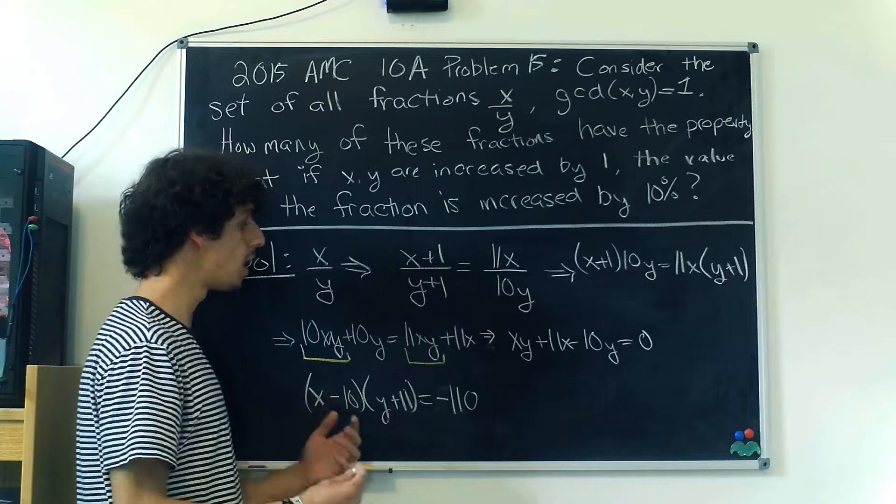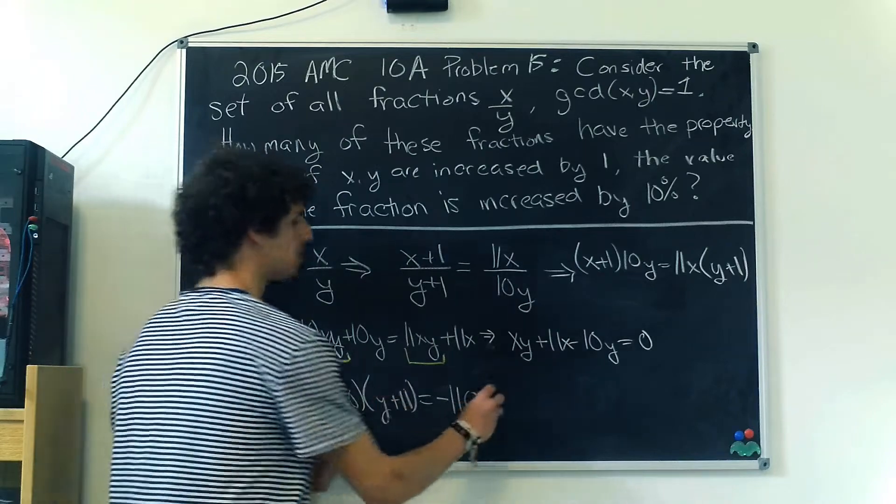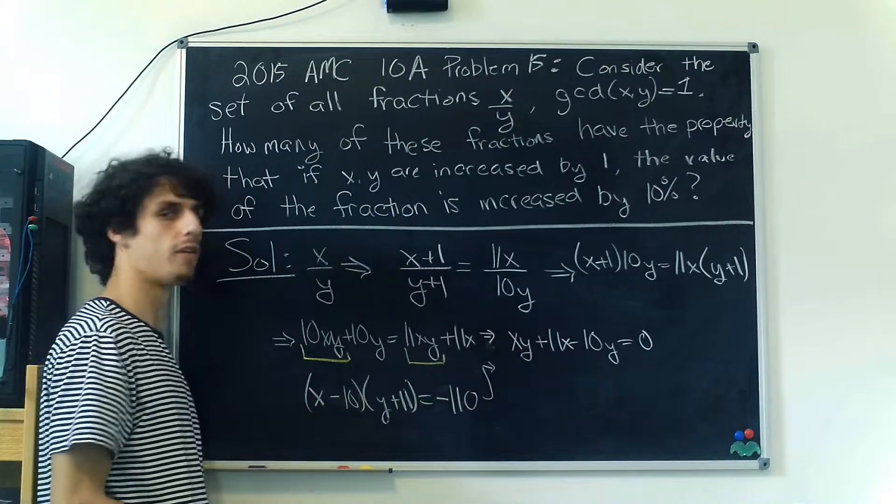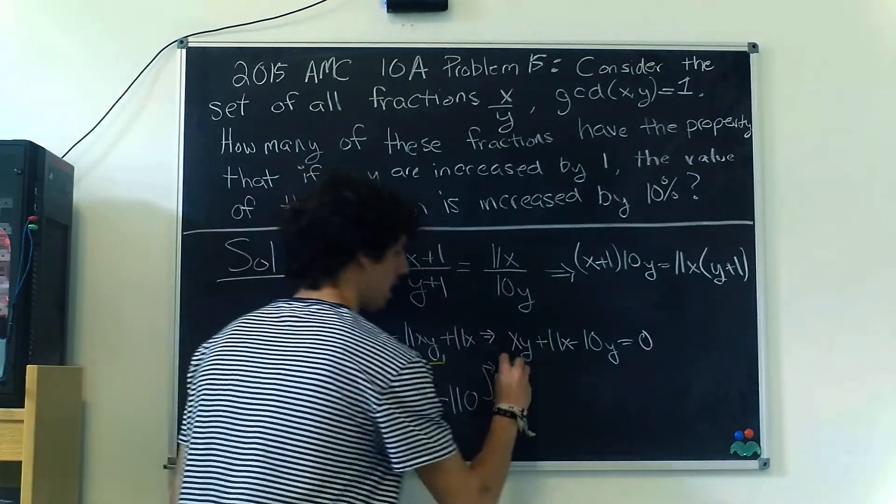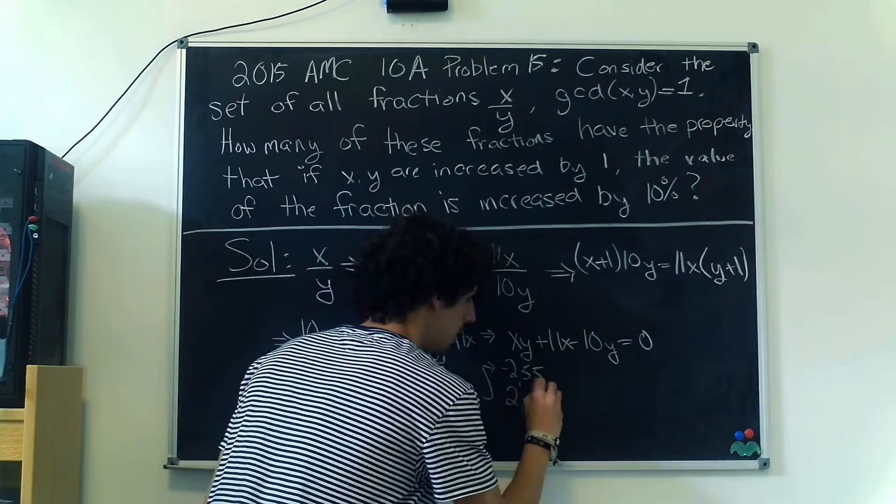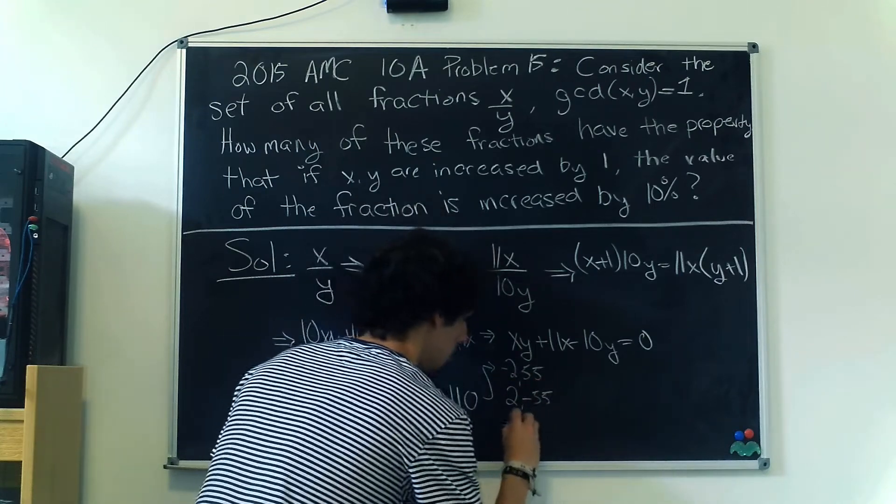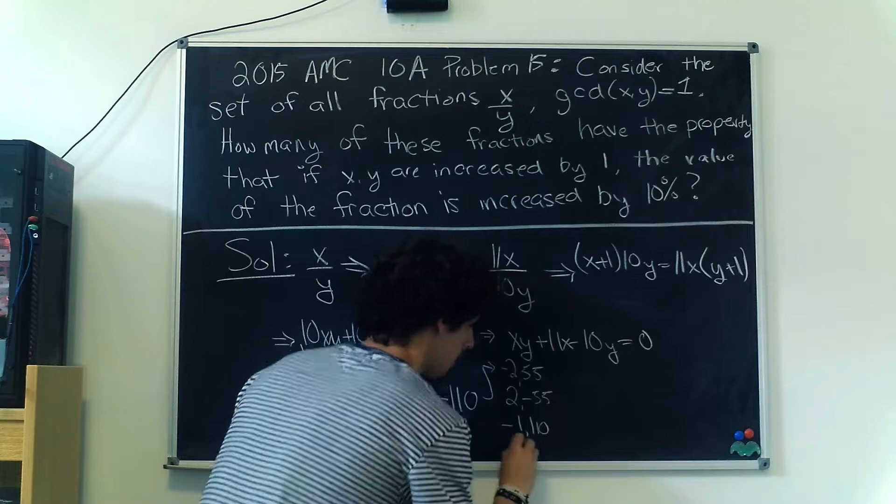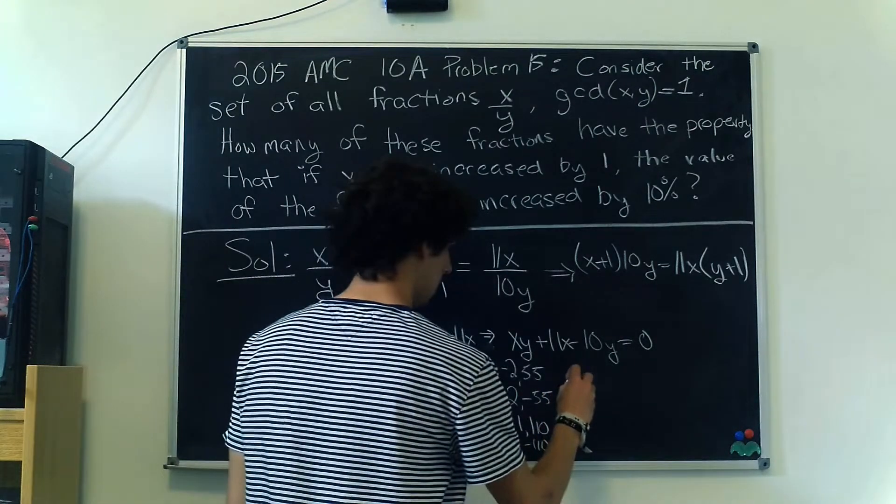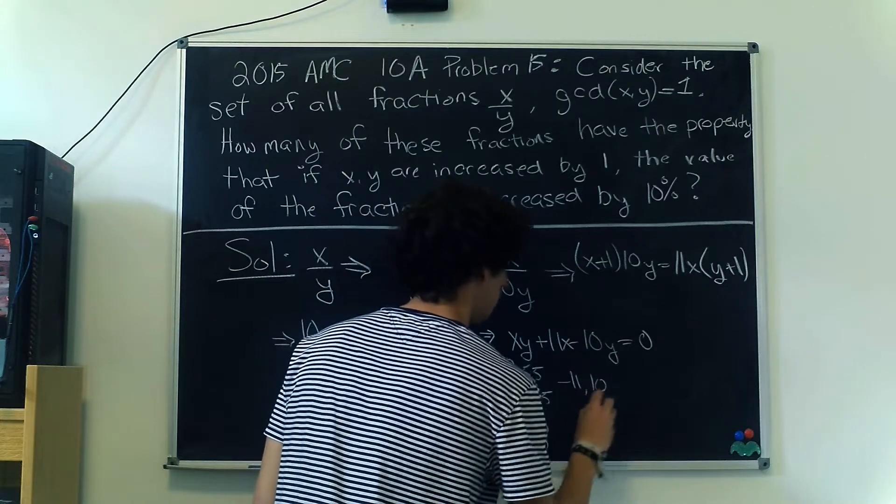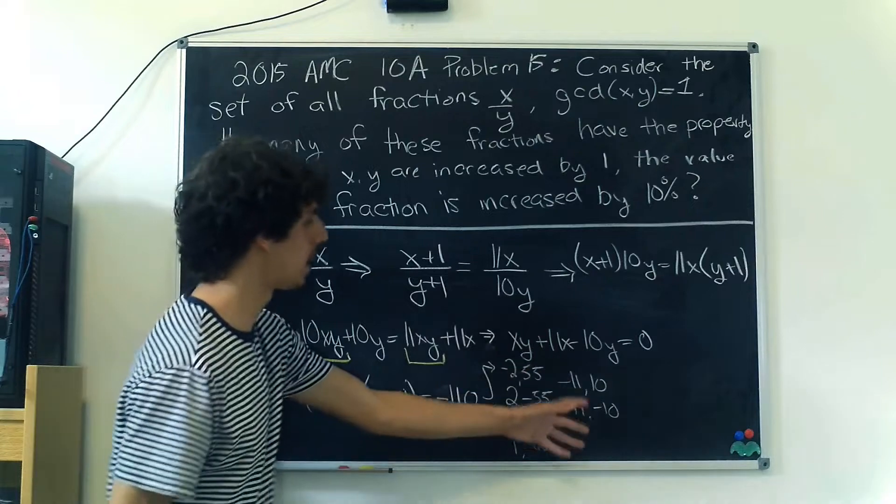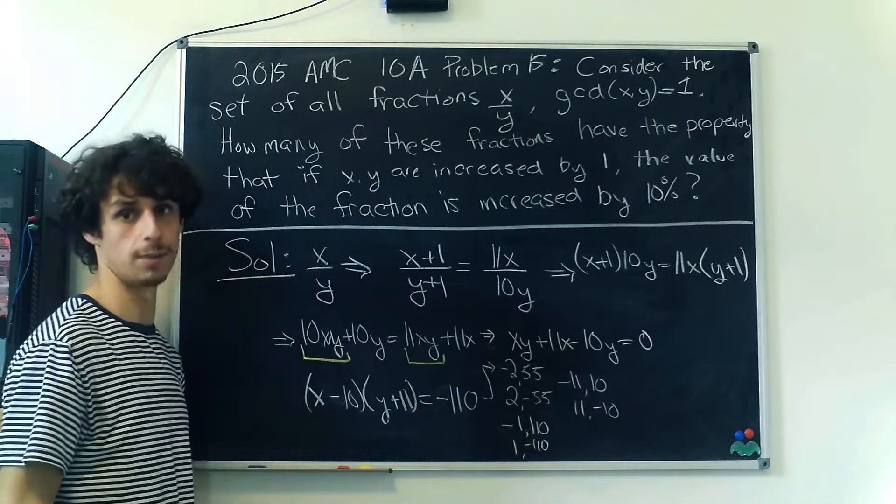The reason we want to do this is because now we can split -110 into its integer factorizations to solve for x and y. We have: -2,55; 2,-55; -1,110; 1,-110; -11,10; and 11,-10. Let's bring these possibilities up and keep going.